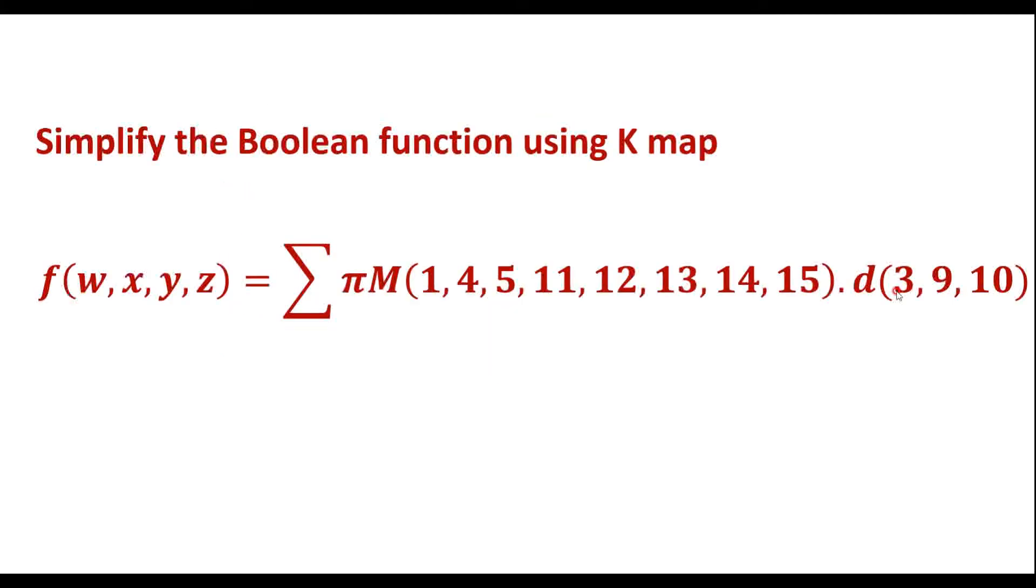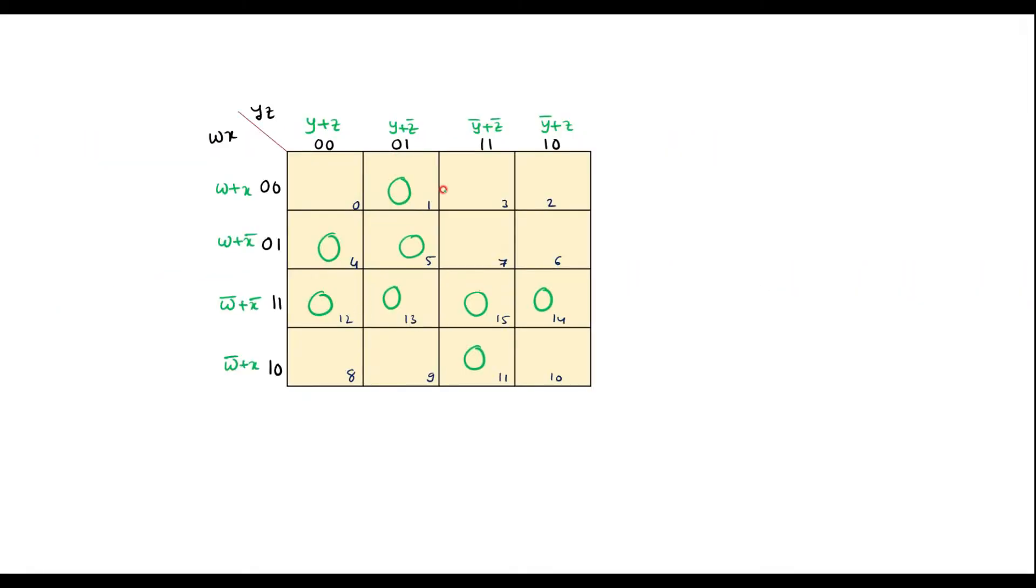So these are the zeros. Now in cell number 3, 9, 10, we have to enter don't care. That is 3, 9, and 10. In remaining cells, we have to enter 1.